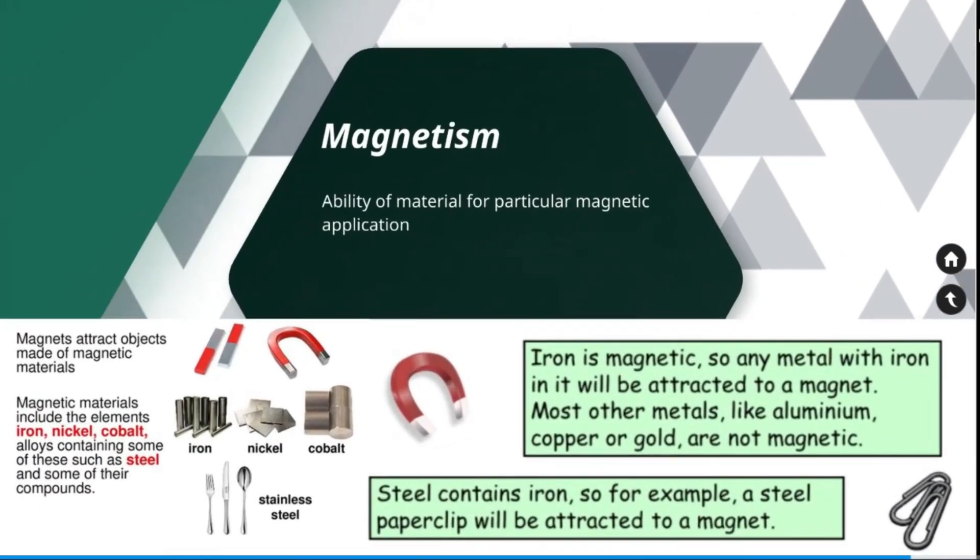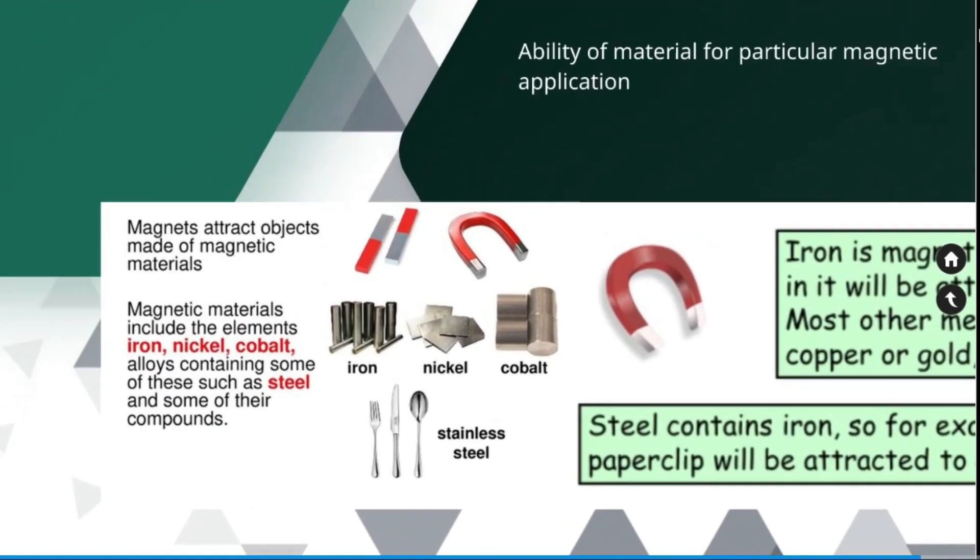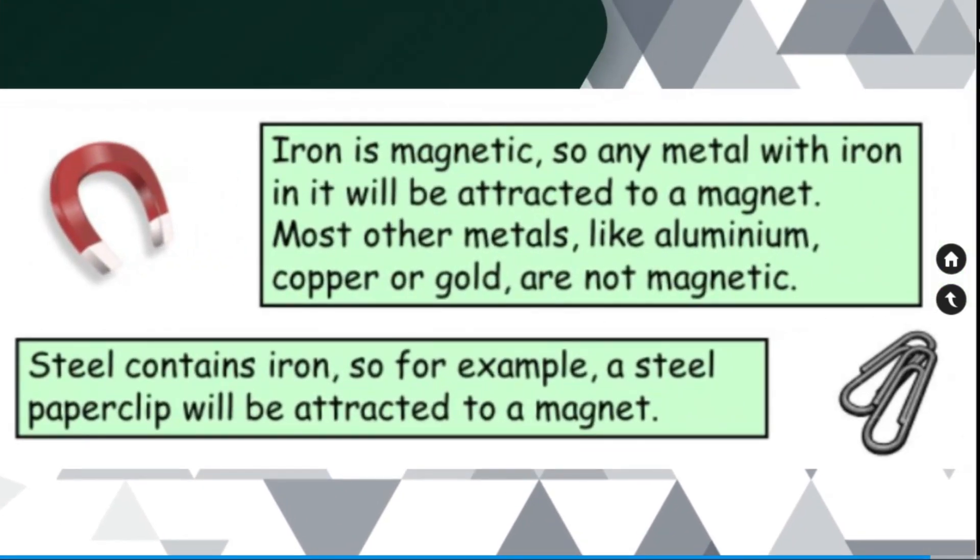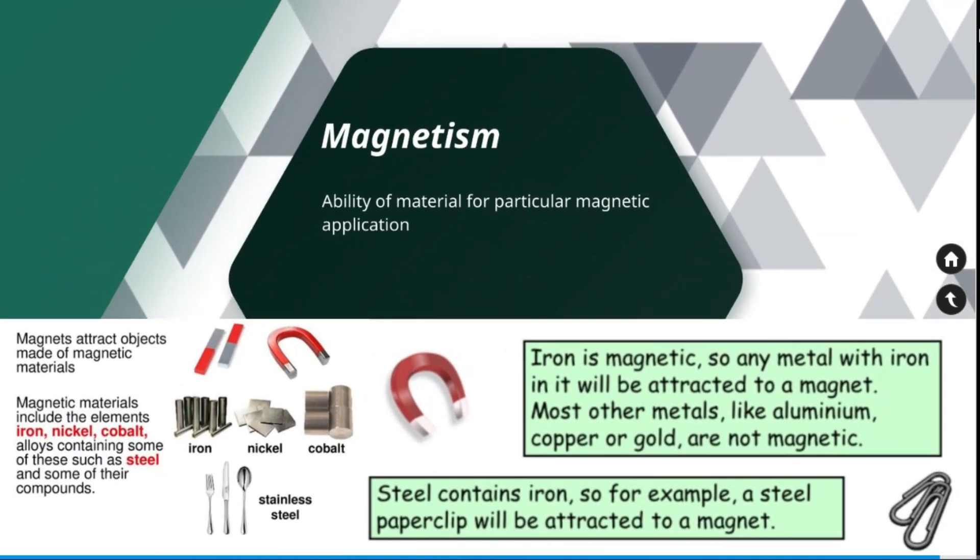Magnetism. Magnetic properties of a material are those which determine ability of material for particular magnetic application. Examples of magnetic materials are iron, nickel, cobalt, steel, etc. Iron is magnetic so any material with iron in it will be attracted to magnet. Most other materials like aluminum, copper, or gold are not magnetic because they don't contain iron.